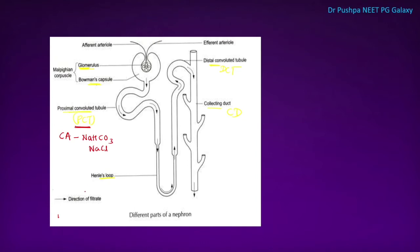In the loop of Henle, there is only absorption of water — there is no salt absorption — so urine gets concentrated. That is why this segment is called the concentrating segment of the nephron.